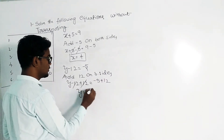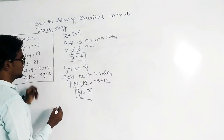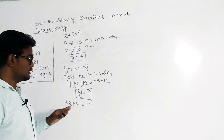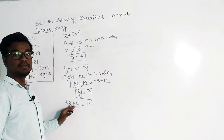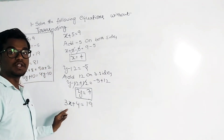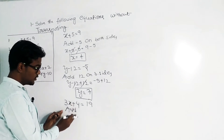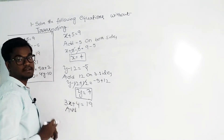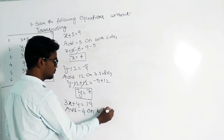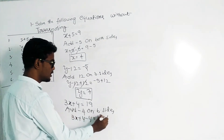Next one is 3x plus 4 equals 19. Here the variable has a coefficient of 3 and there is a plus 4. We first remove the plus 4 by adding minus 4 on both sides. If it is plus 4, we add minus 4; if it is minus 4, we add plus 4. So add minus 4 on both sides.